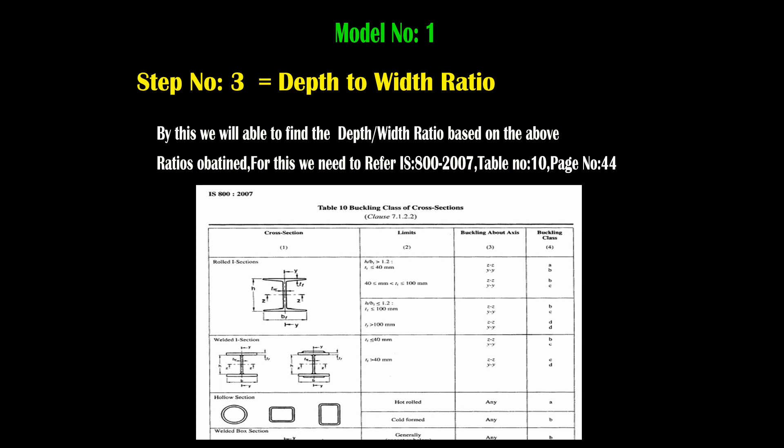Based on Table 10, we classify the buckling class. For hollow sections: cold rolled is class A, cold deformed is class B, generally class B. Remember: for channel sections, T sections, built-up sections, and angle sections, the buckling class is directly C — no need to check depth-to-width ratio. For I sections and welded sections, we must solve the depth-to-width ratio. This Table 10 from page 44 is very important for classifying the buckling class.